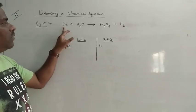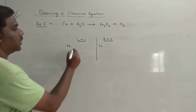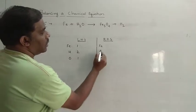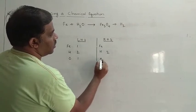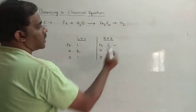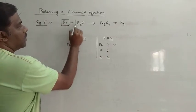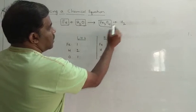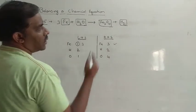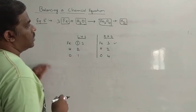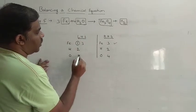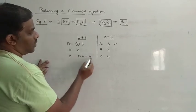Now in example 5 we have: Fe plus H2O gives Fe3O4 plus H2. The number of irons are 1, hydrogens 2, oxygens 1 on the left. On the right, hydrogens are 2, oxygens are 4, and irons are 3. First let us balance irons — we write 3 in front of Fe on the left, so both sides have 3 irons and they are balanced. Now to balance oxygens, we multiply H2O by 4, giving us 4 oxygens on the left — which is balanced with the 4 oxygens in Fe3O4.